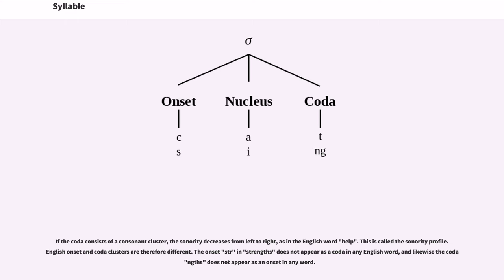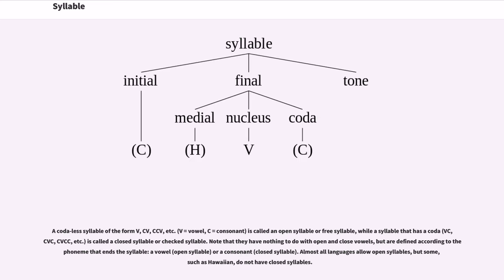English onset and coda clusters are therefore different. The onset str in strengths does not appear as a coda in any English word, and likewise the coda ngths does not appear as an onset in any word. A codaless syllable of the form V, CV, CCV, etc. is called an open syllable or a free syllable, while a syllable that has a coda is called a closed syllable or a checked syllable. Note that they have nothing to do with open and closed vowels, but are defined according to the phoneme that ends the syllable, a vowel or a consonant.